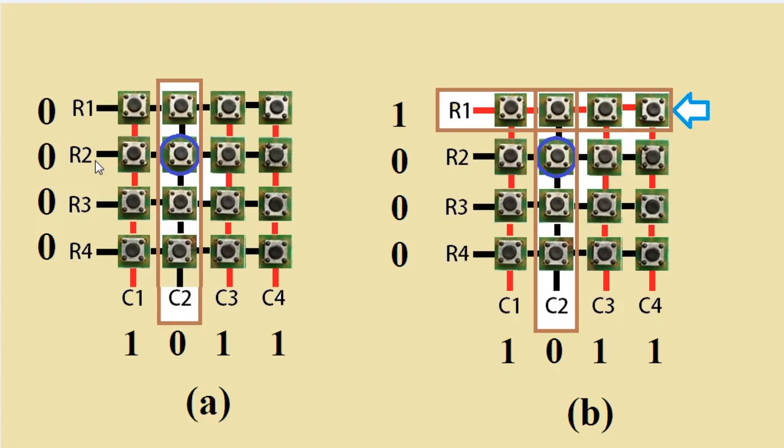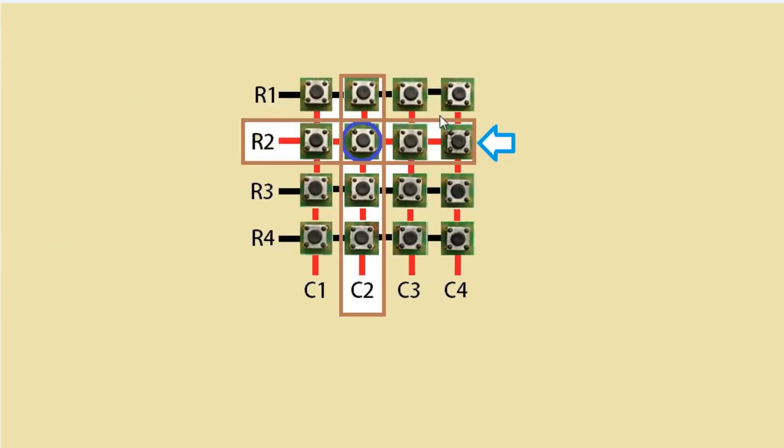Once the column corresponding to the key pressed is located, the next thing that the software has to do is to start writing logic 1 to the rows sequentially and check if C2 becomes high. The logic is that if a button in that row was pressed, then the value written to that row will be reflected in the corresponding column as they are short-circuited. The procedure is followed till C2 goes high when logic high is written to a row. In this case, a logic high to the second row will be reflected in the second column.